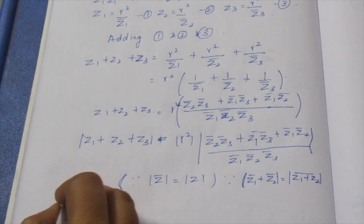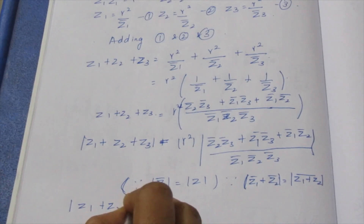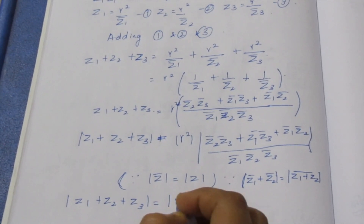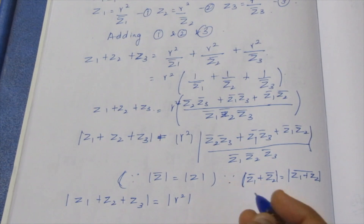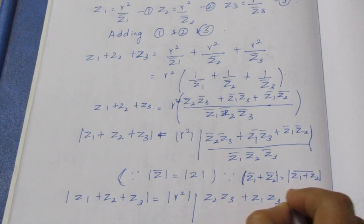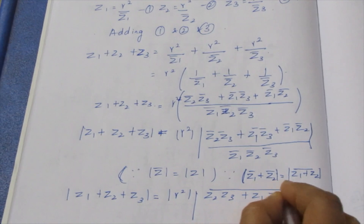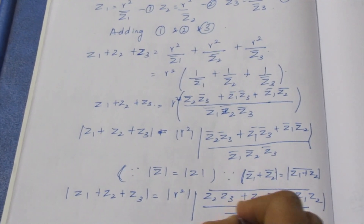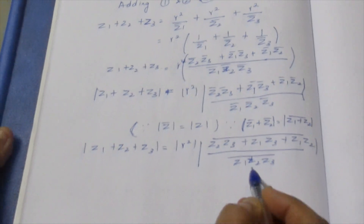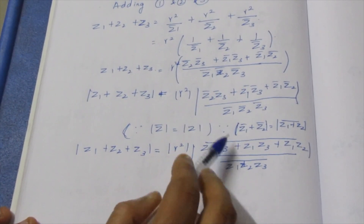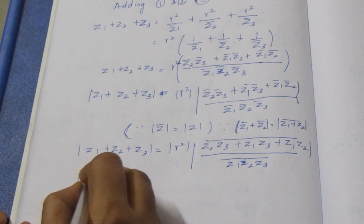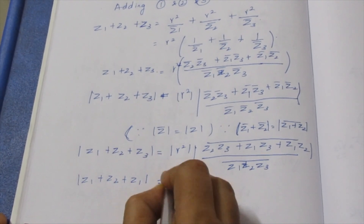Modulus of Z1 plus Z2 plus Z3 equals R squared, and since R is greater than 0, it is a positive number. Removing the modulus, this equals modulus of (Z2·Z3 plus Z1·Z3 plus Z1·Z2). Then multiplying through, Z1 plus Z2 plus Z3 equals R squared times the relevant expression.